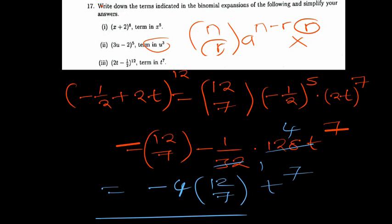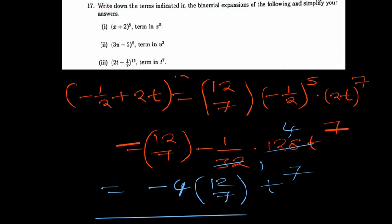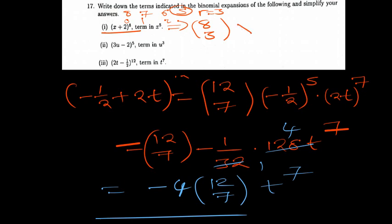For those who want to think more: this is one and the same approach. If you expand the first example as originally given — x plus 2 raised to the power 8 — you know x is reducing. You ask yourself: at what term will it be x to the power 5? Since x starts at power 8 and reduces — 8, 7, 6, 5 — it will be at the 4th term, where r equals 3, starting from 0. So you'd have 8 choose 3 times x to the power 5 times 2 to the power 3, which gives the same result.